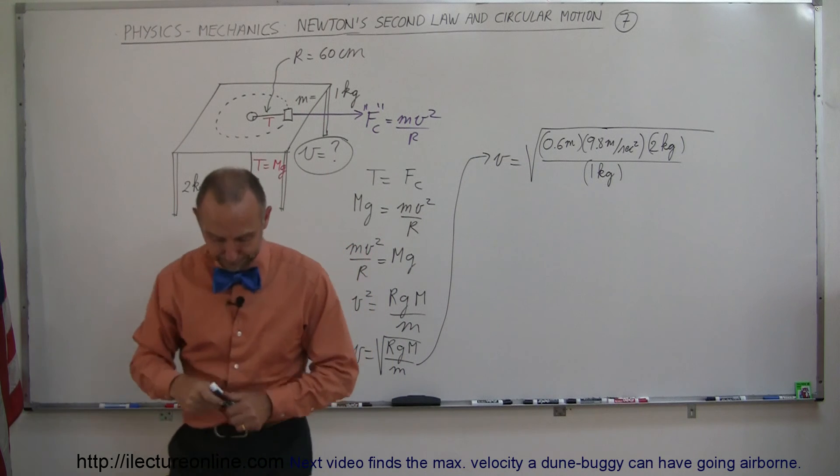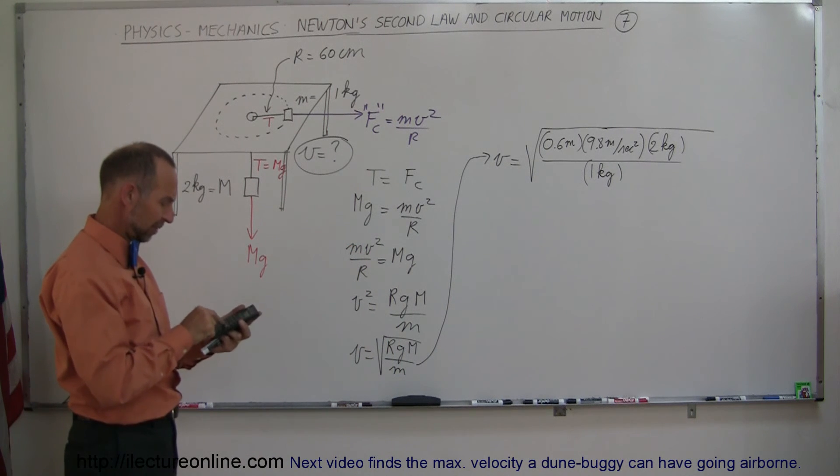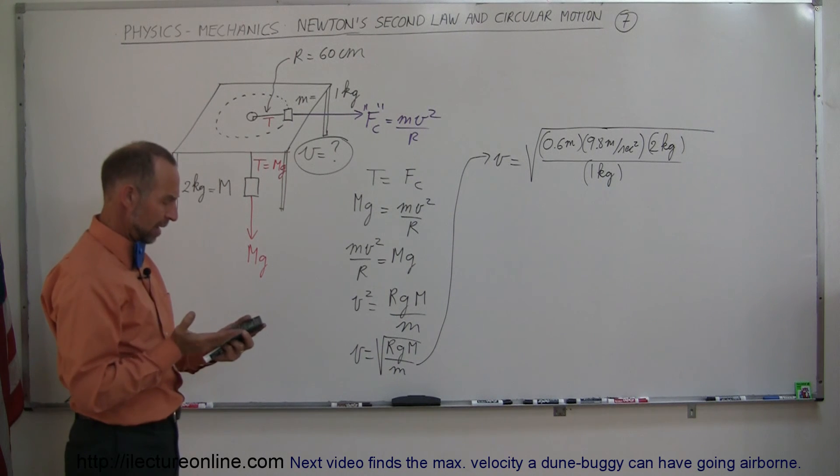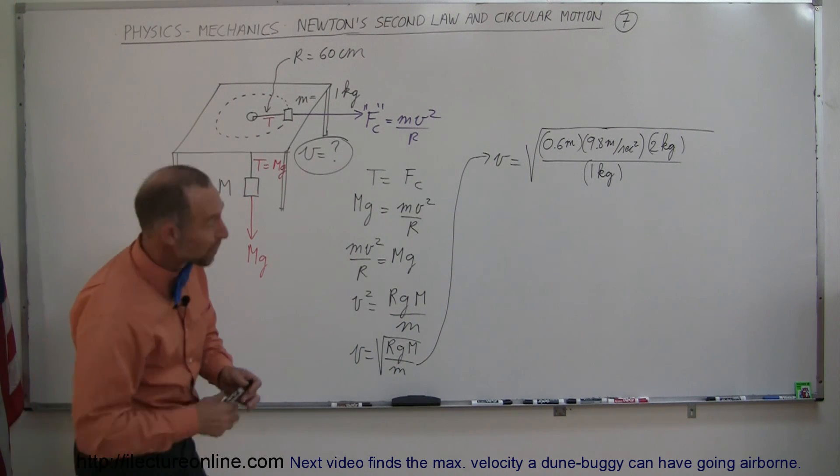Like that. And by the calculator, all right, so we have 0.6 times 9.8 times 2. Take the square root and it says 3.4 meters per second.